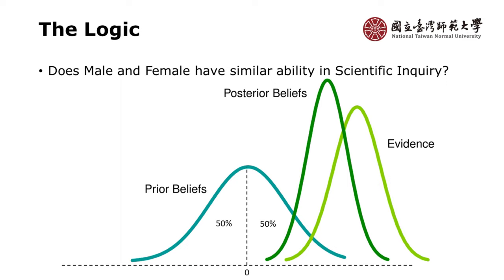So this is the logic using Bayes' theorem. Bayes' theorem is a theorem in mathematics: when you have a prior belief and then add evidence from data, you get a posterior belief — the new updated belief about an issue. When you conduct another study, you don't start from 50-50 again; you follow the posterior belief. For example, if the first result gives 80% and 20%, the next study uses 80% and 20% as the prior belief. It's like progressive accumulation of knowledge.